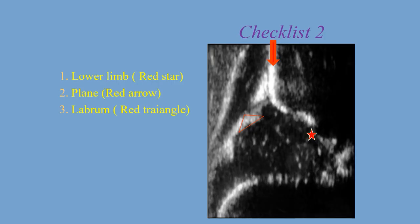Checklist 2 was introduced by Professor Graf to be absolutely sure the image is in the standard plane. Checklist 2 has three important structures from the nine: the lower limb, which is the lowest and brightest part of the bony roof; the iliac bone shadow, which must be straight; and the labrum. If both Checklist 1 and Checklist 2 are met, the images are usable; otherwise they should be discarded and repeated.